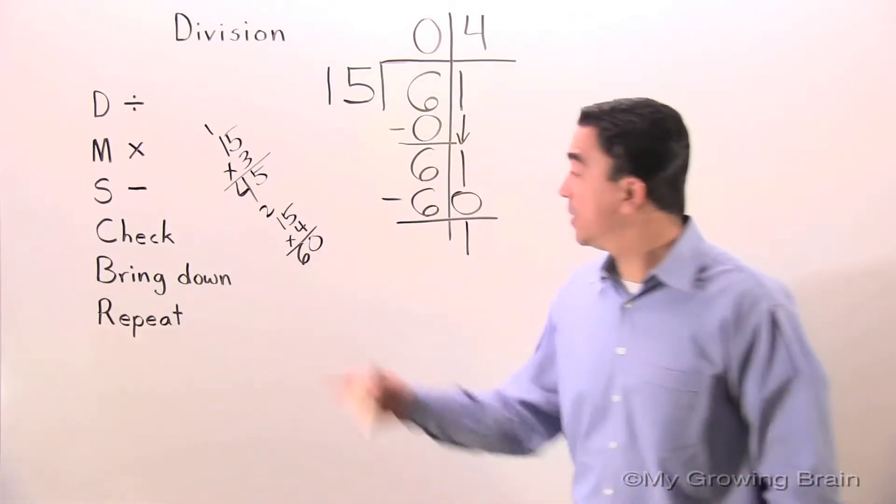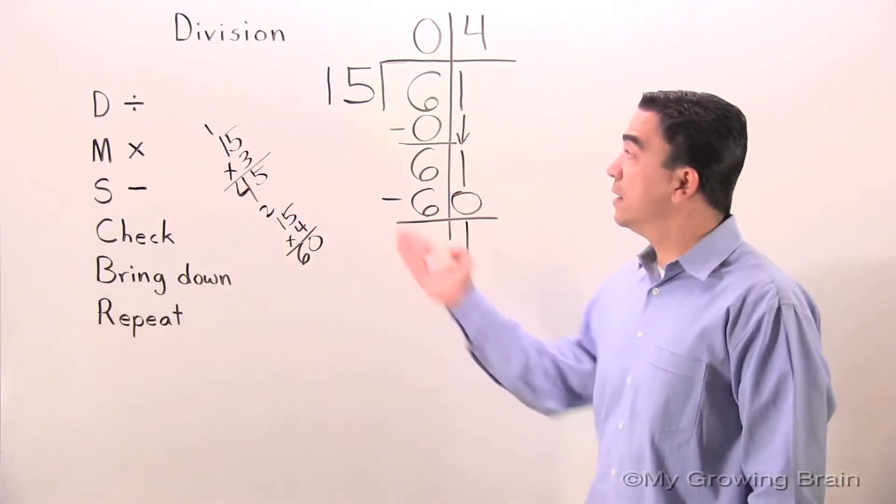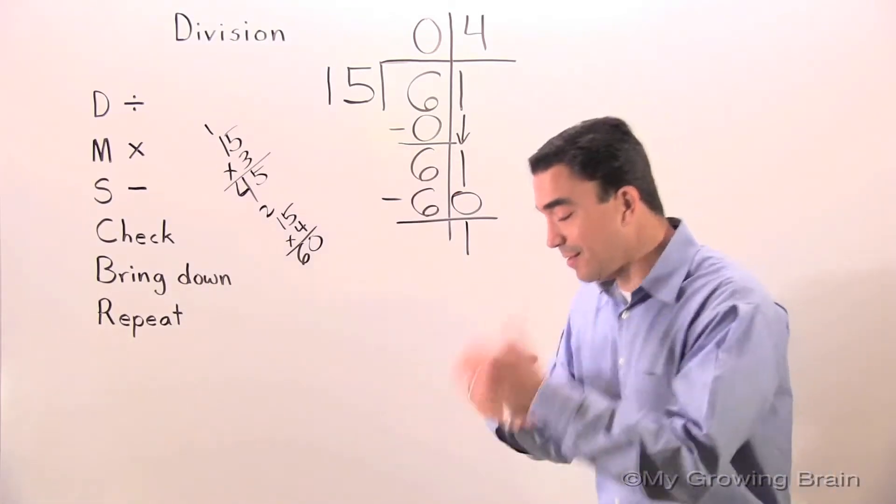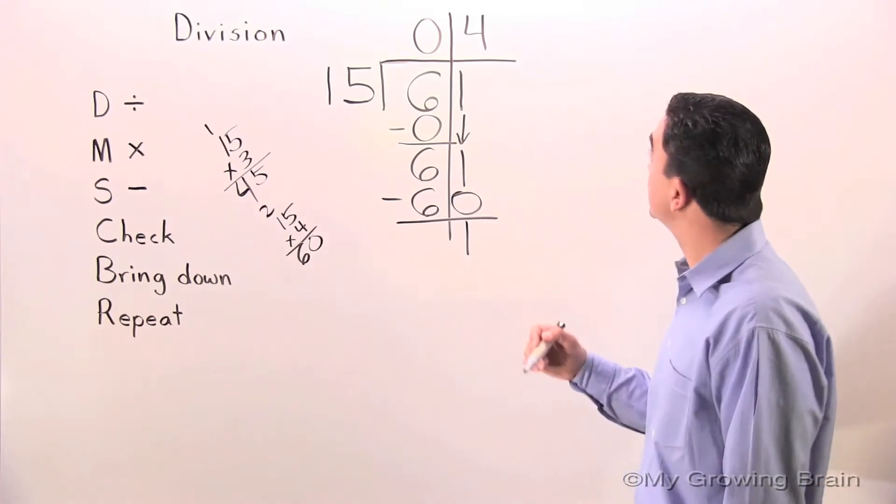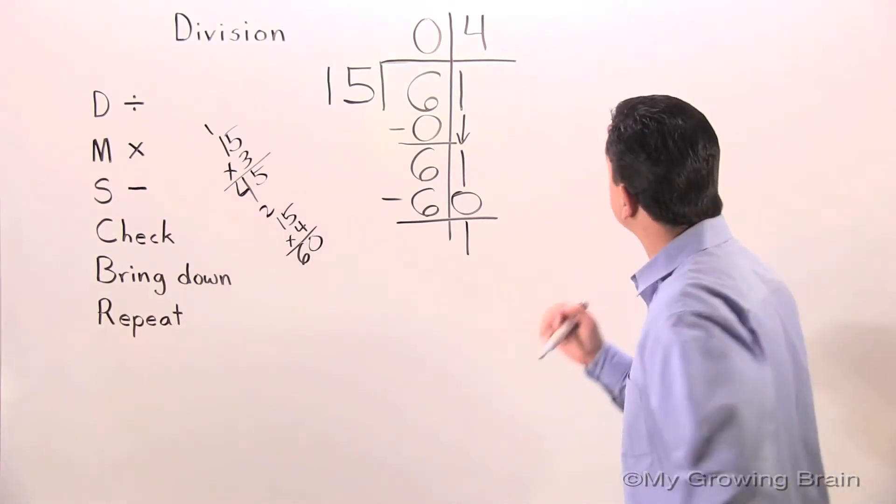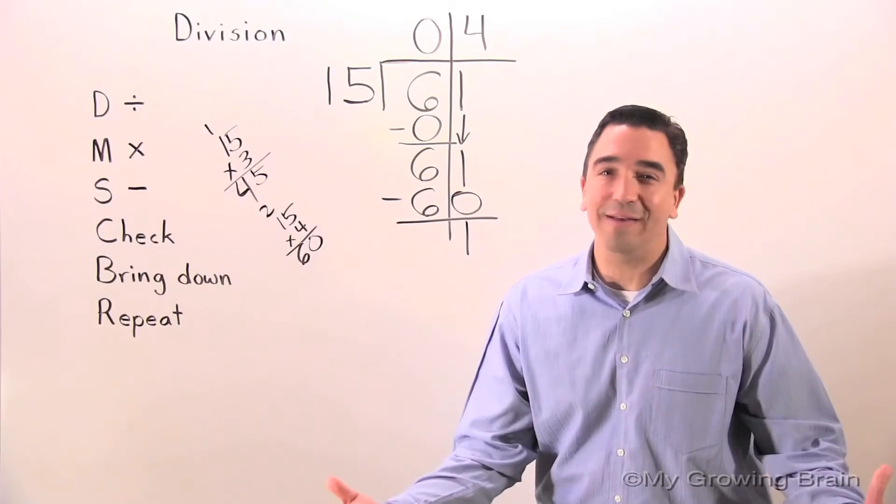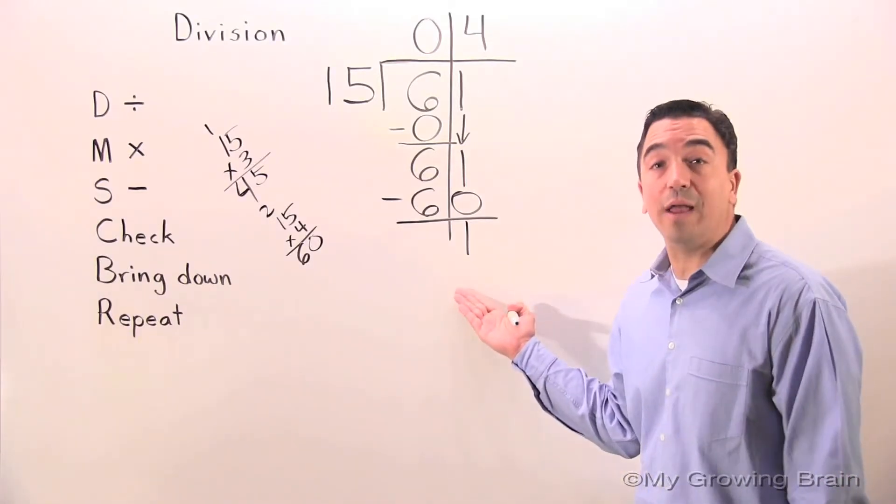Next step, check: 1 is less than 15, let's keep on going. Next step, bring down. There's nothing to bring down. We have a remainder of 1.